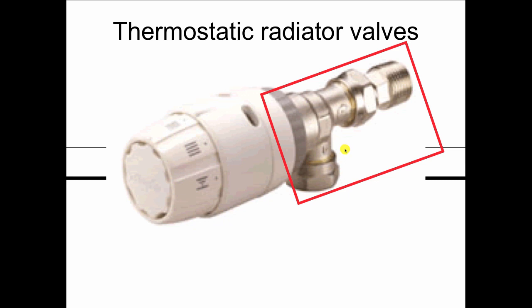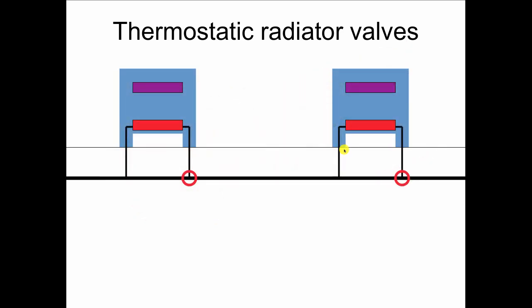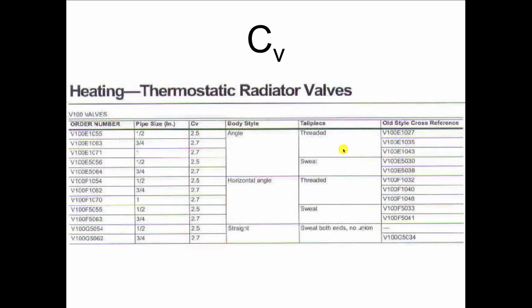But what you have to watch out for when you're buying these for monoflow systems or Diverter-tee systems is what's called the CV because the TRV would go right there. But you've got to look at this thing called CV which is in the catalog as you see here in the Honeywell catalog. It says CV equals 2.5 for the half inch valve and 2.7 for the three quarter inch valve.